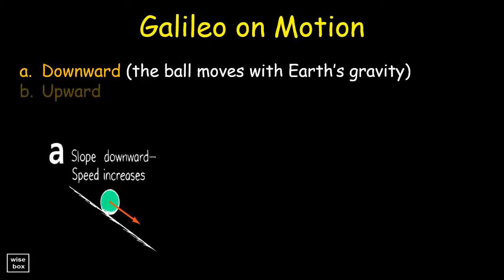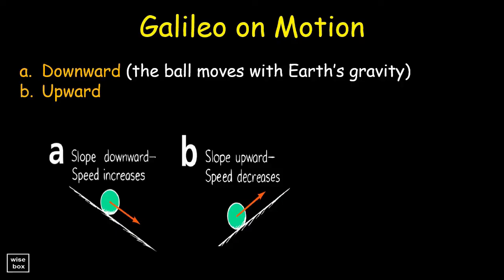When it's upward, the speed of the ball decreases. Again, we can explain that the speed decrease observed by Galileo was because this ball moves against earth's gravity.